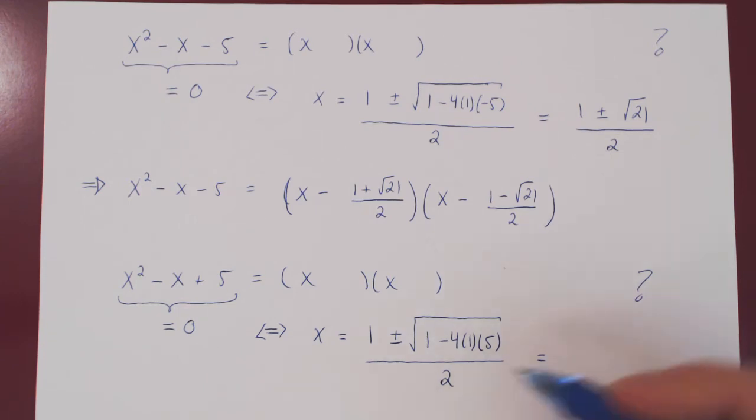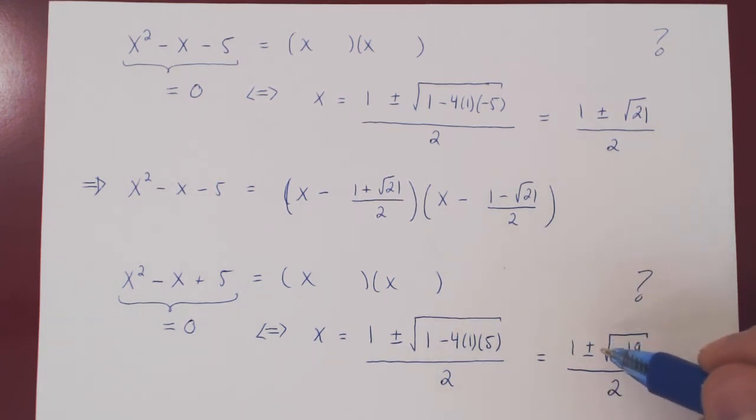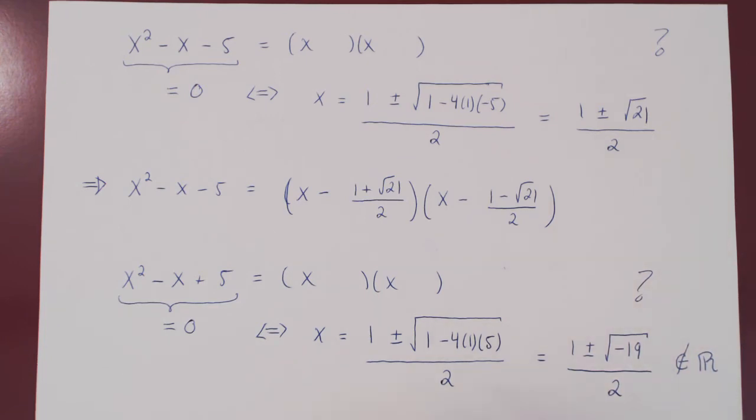And here's where things are interesting. We have 1 plus or minus the root of 4 times 1 times 5 is 20, and so we have 1 minus 20, which is negative 19, over 2. Now, here's where it's interesting. The root of a negative number is not a real number. And so, both of these values, 1 plus the root of negative 19 over 2, and 1 minus the root of negative 19 over 2, are not real numbers. So, to factor this polynomial over the real numbers is actually not possible.